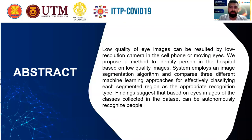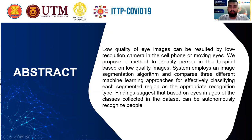Firstly, the abstract. We conclude the abstract and the project as: a low quality eye image can result from a low resolution camera in a cell phone or moving eyes. We propose a method to identify persons in the hospital based on low quality images. The system employs an image segmentation algorithm and compares three different machine learning approaches for effectively classifying each segmented region as the appropriate recognition type. Findings suggest that based on eye images of the classes collected in the dataset, people can be autonomously recognized.